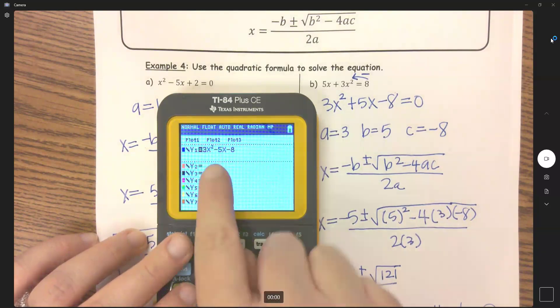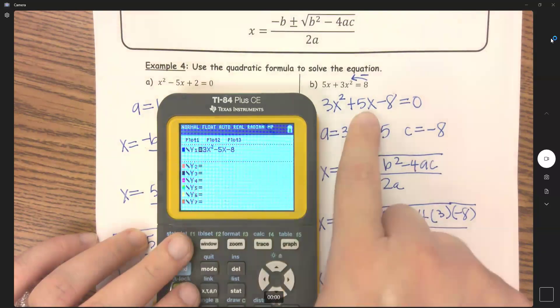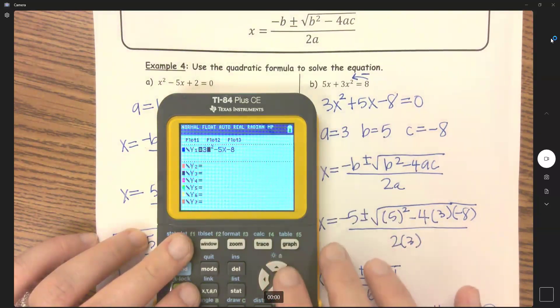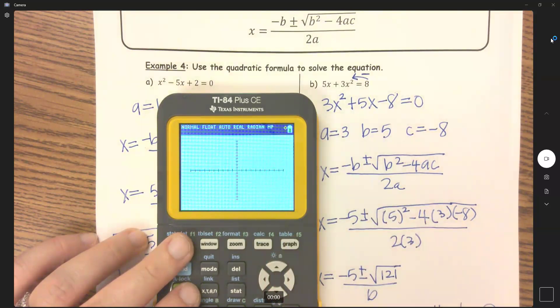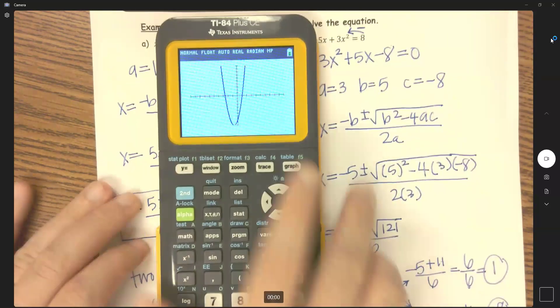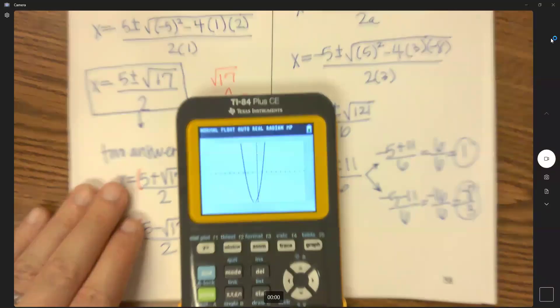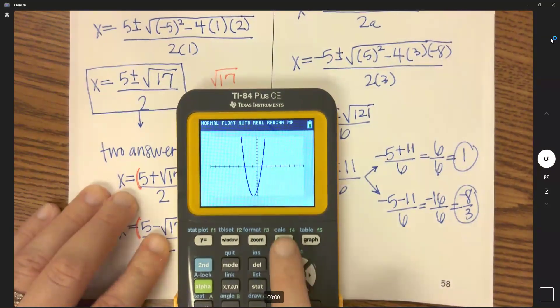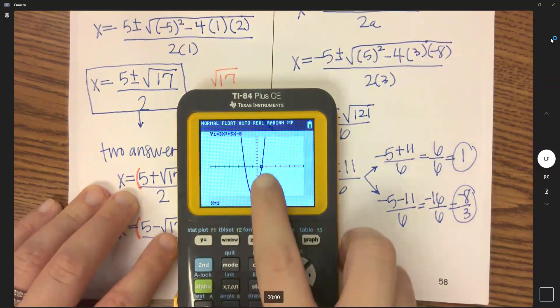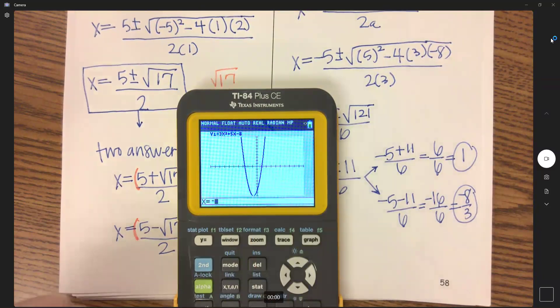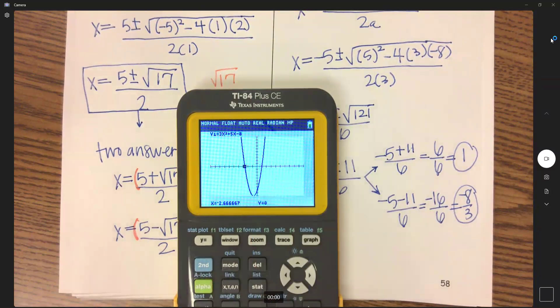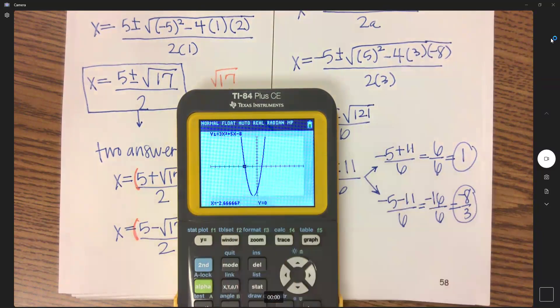So I accidentally put a minus 5 instead of a plus 5. So I'll say that will not match our answer. Okay, that one looks better. So use trace. Trace 1, it's me a y of 0, and there's my x-intercept. And then negative 8 divided by 3, a y of 0, and there's my second intercept.